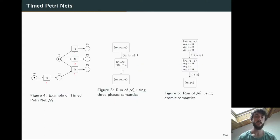To do so, we start from the Timed Petri Net model, as defined by Ram Shandani in the 70s. In this model, each transition takes a positive time, a duration, to fire according to a three-phase firing.